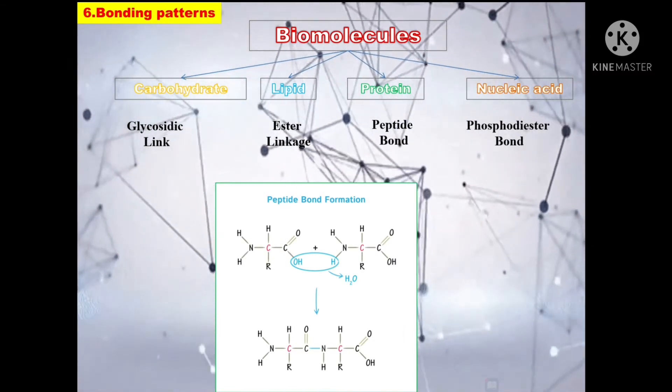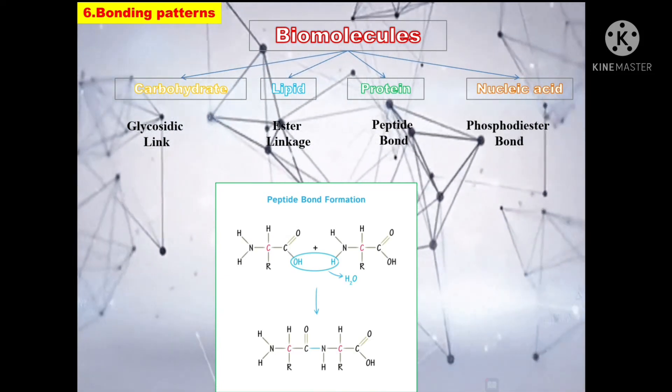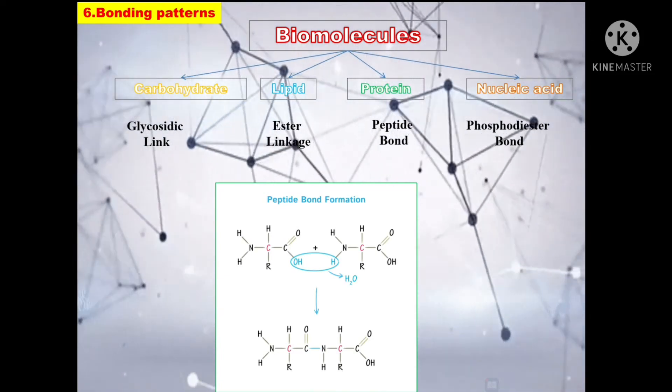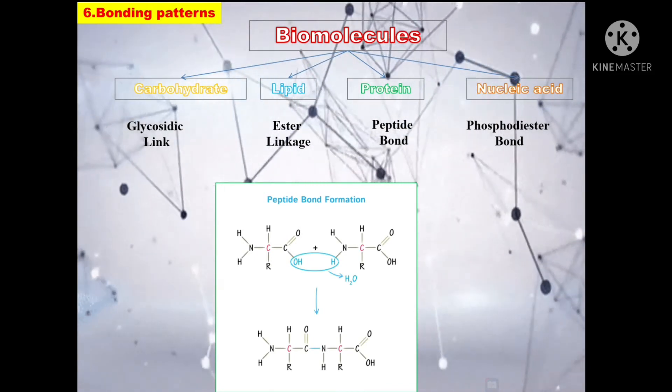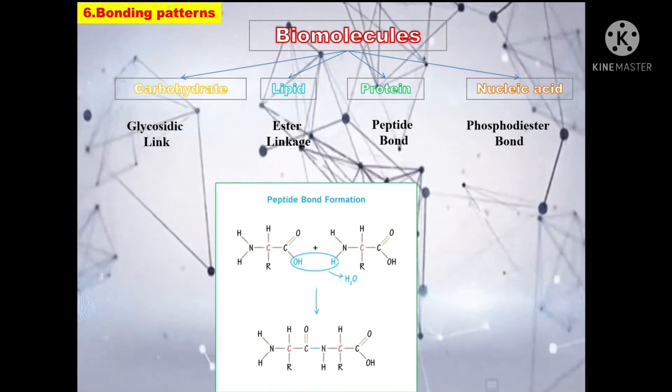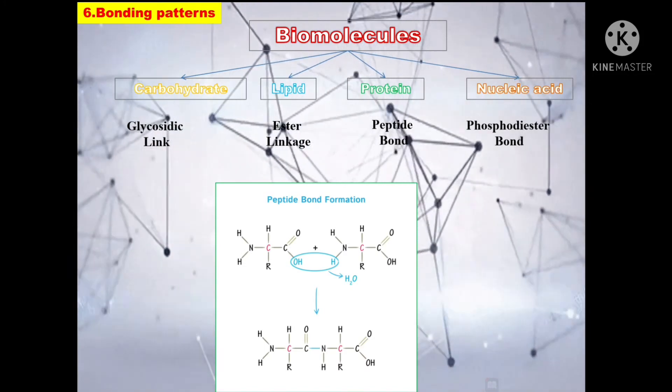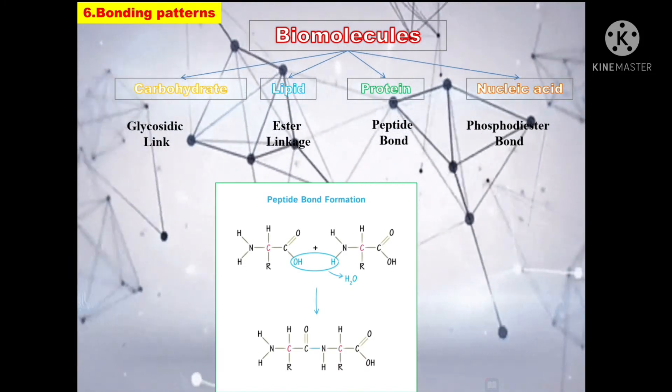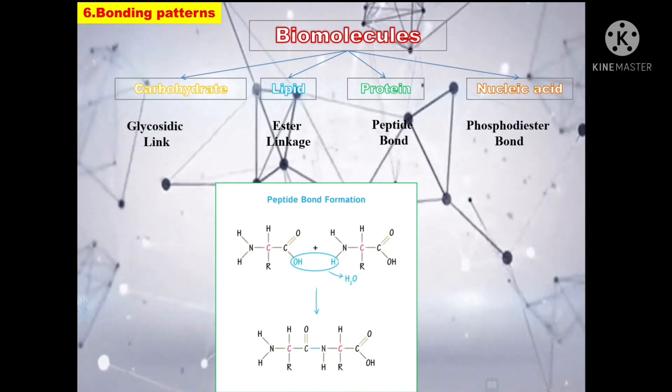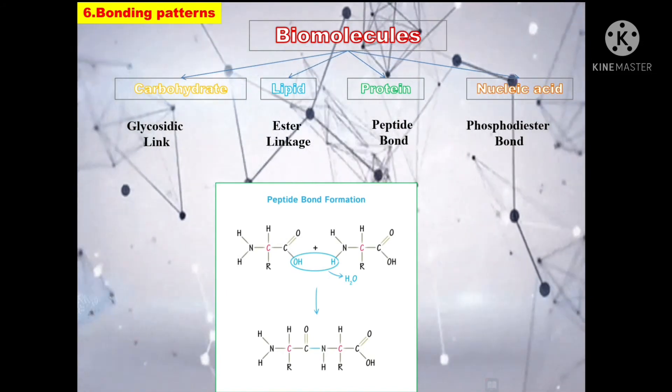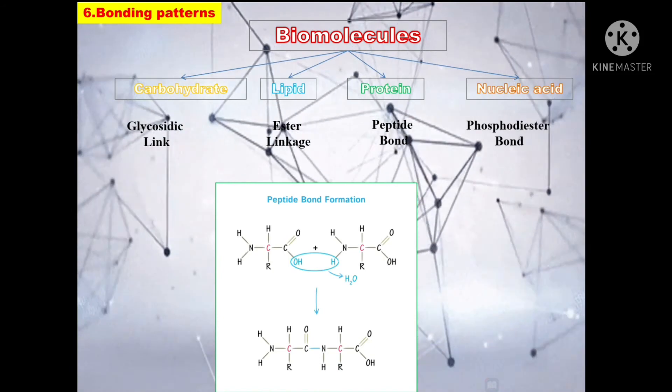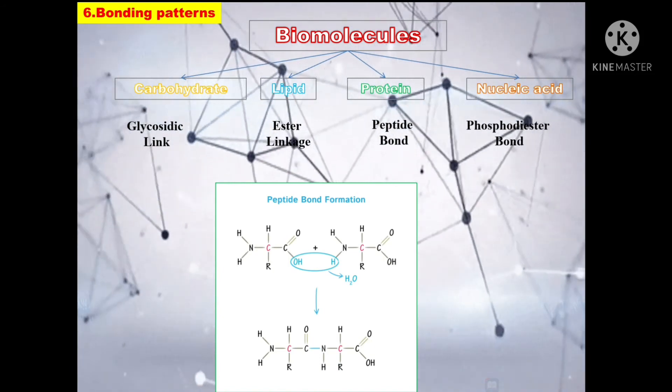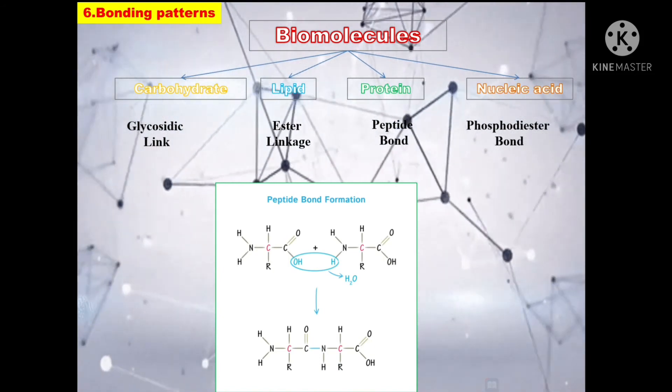So whenever two amino acids combine together, they undergo dehydration process due to which a bonding is formed which is termed as the peptide bond. One of the amino acids gives a carboxyl group to the reaction and the other amino acid loses a hydrogen from the amine group, that means the NH2 group, thus forming a peptide linkage.